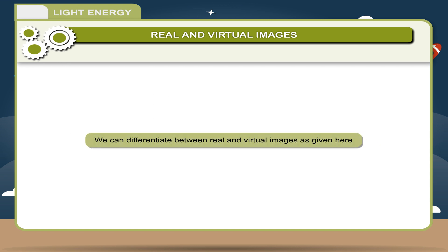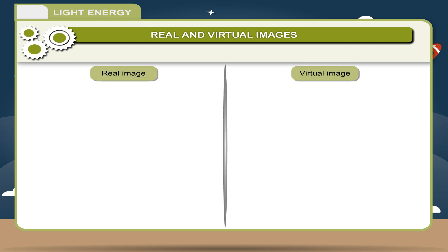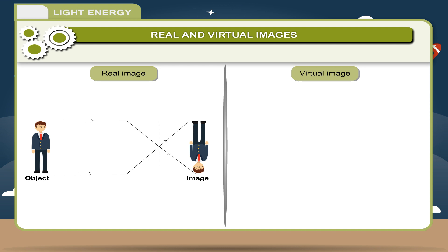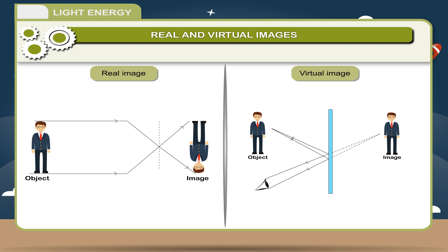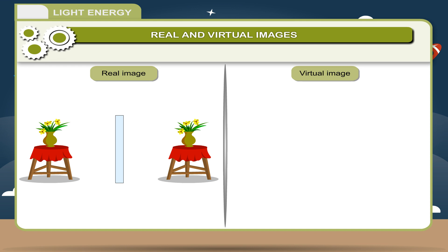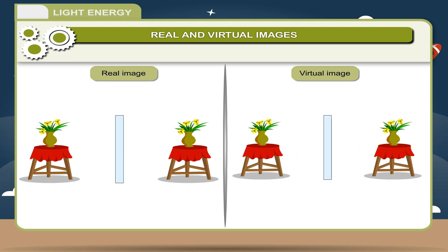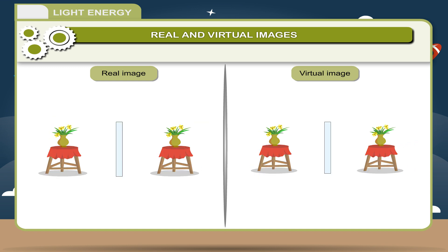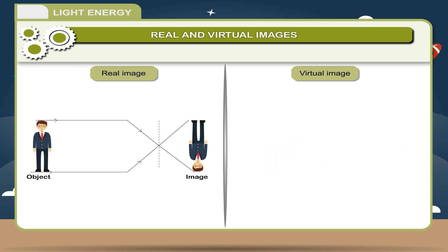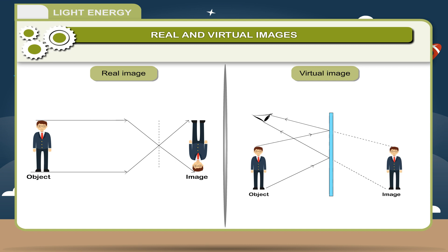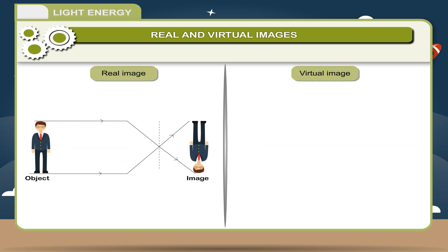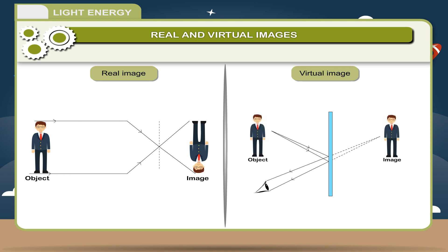We can differentiate between real and virtual images as follows. For a real image: the rays of light after reflection actually meet at a point; it can be obtained on a screen; it is always inverted; and the image is formed in front of the mirror. For a virtual image: the rays of light after reflection appear to meet at a point; it cannot be obtained on a screen; it is always erect; and the image is formed behind the mirror.